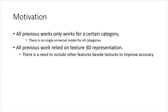The author argues that all prior works only work on certain categories — for example, one model just for cars, another for bottles, etc. There is no single universal model for all categories. Additionally, all previous works relied on texture-only 3D representation, which shows the shape of the object but lacks other features that could improve model performance.